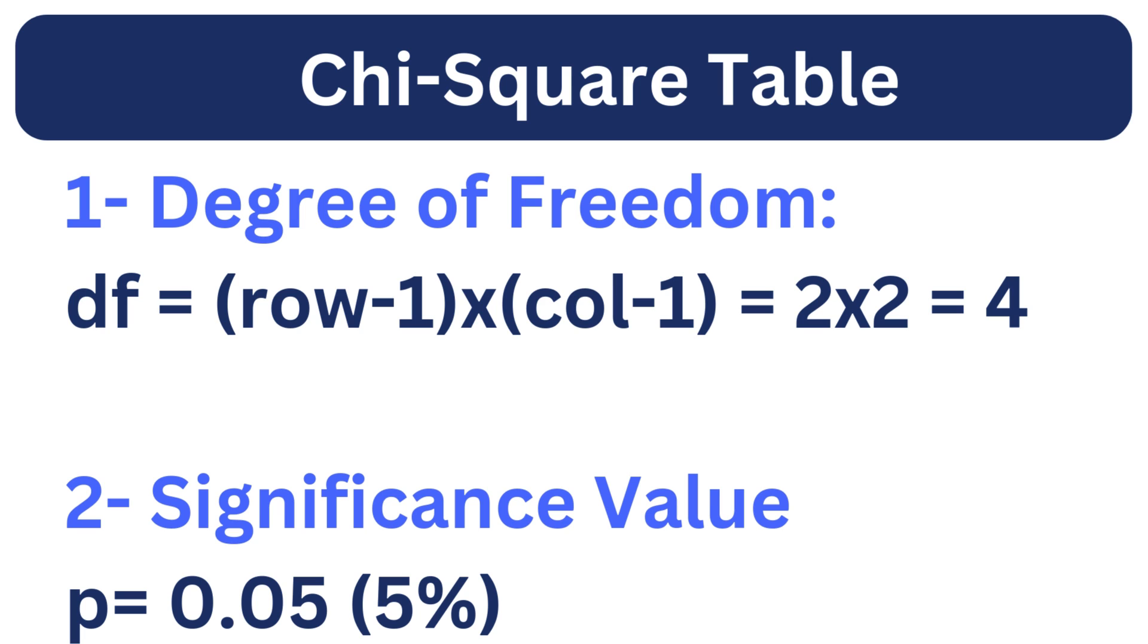Degree of freedom can be calculated from this formula. The degree of freedom represents the number of independent comparisons that can be made between the observed and expected values. Higher degrees of freedom typically indicate more categories being compared, leading to a broader range of possible variations.